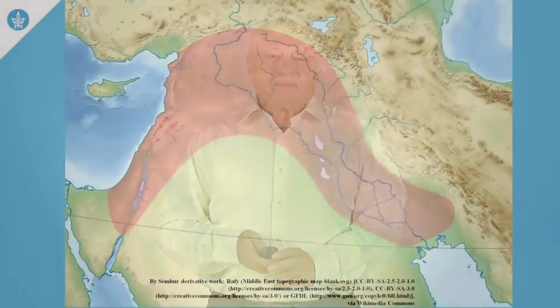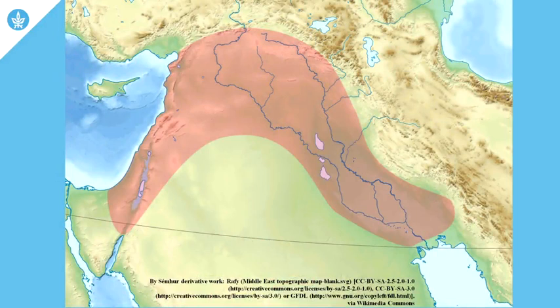Now we move to the Fertile Crescent and look at the countries that were established there. The Fertile Crescent is that region which stretches from the Mediterranean in the west to the Persian Gulf in the east, including the countries of Lebanon, Syria, Iraq, Transjordan, Palestine, and Israel. It is that part of the world known as the Fertile Crescent.